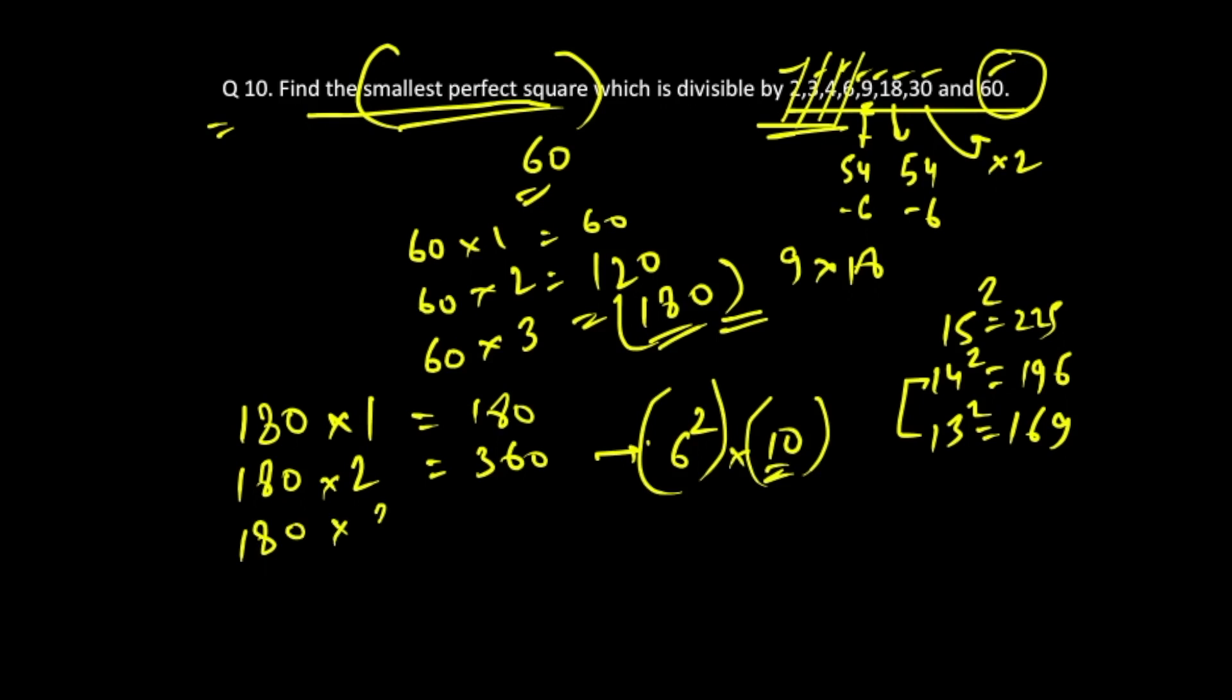We'll proceed further. 180 times 3 is 540. Is it a perfect square? Again, this is not a perfect square.